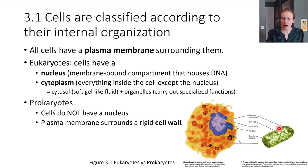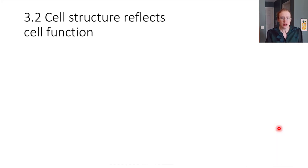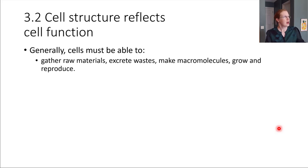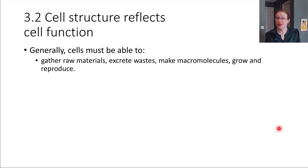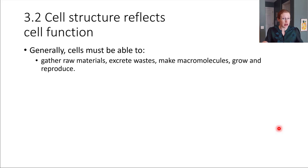Let's look at how the internal organization — the structure inside the cell — affects its function. In general, all cells need to accomplish certain things: gathering materials from the environment around them, getting rid of waste products generated inside the cell, making the macromolecules we learned about in chapter two — things like carbohydrates, proteins, lipids, and nucleic acids — and, as living things, being able to grow and reproduce. There are structures present in all cells to allow these things to happen.